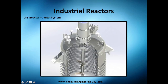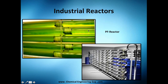Here's another CSTR with a jacket system — a set of tubes that heat the reactor. You can see multiple inlets for level and temperature sensors, plus the manhole. Now we move to a plug flow reactor.